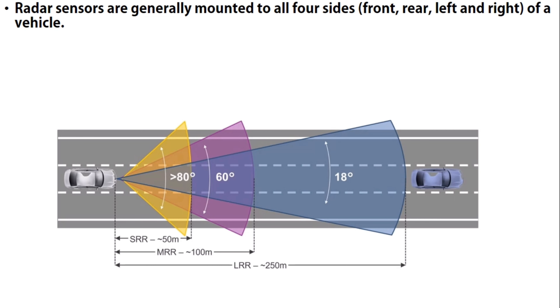Radar sensors are generally mounted on all four sides — front, rear, left, and right — of your vehicle.